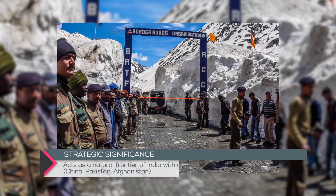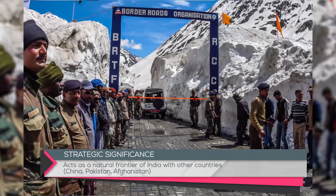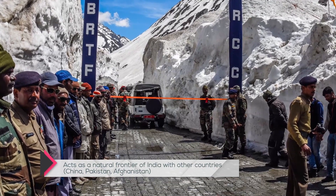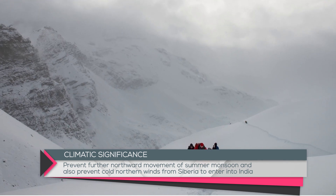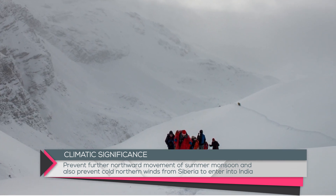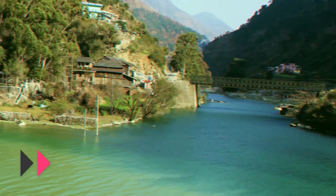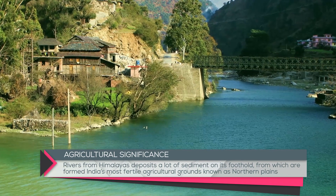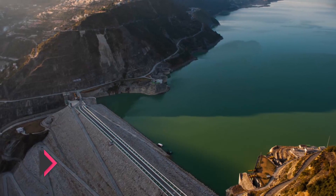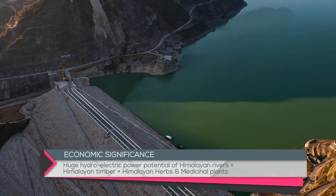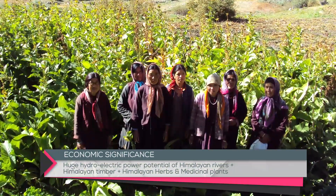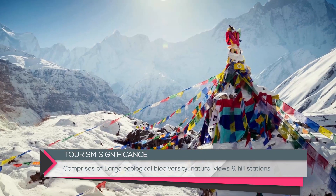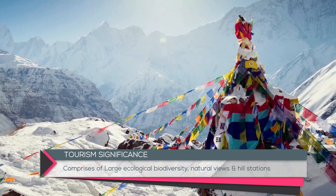The significance of the Himalayas for India includes strategic significance — they act as a natural frontier with China, Pakistan, and Afghanistan. They have climatic significance by preventing the northward movement of the summer monsoon and blocking cold Siberian winds from entering India. Their agricultural significance is that Himalayan rivers deposit sediment forming India's most fertile Northern Plains. Economic significance includes hydroelectric power potential, Himalayan timber, and world-famous medicinal herbs. They also have tourism significance due to large ecological biodiversity and natural landscapes.